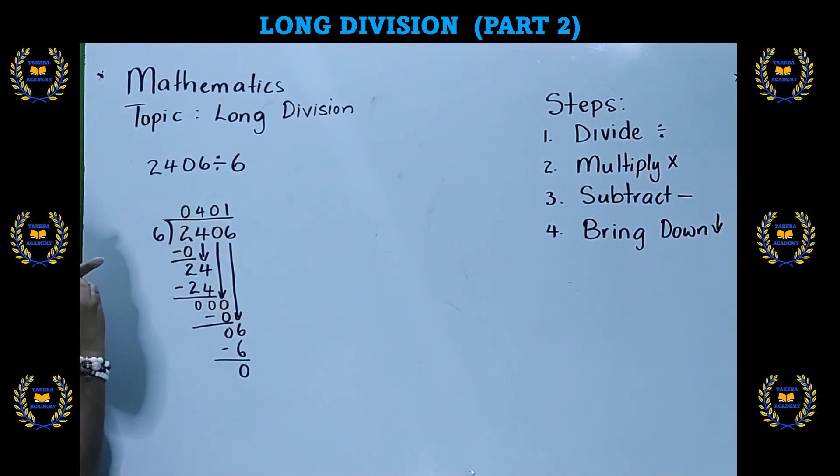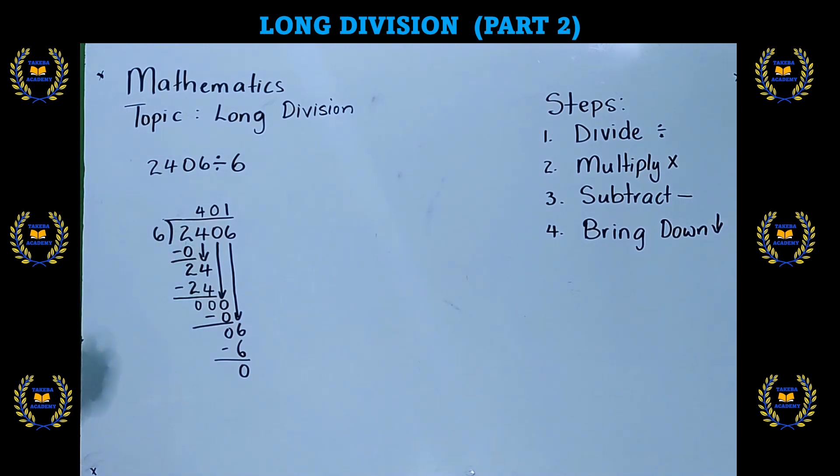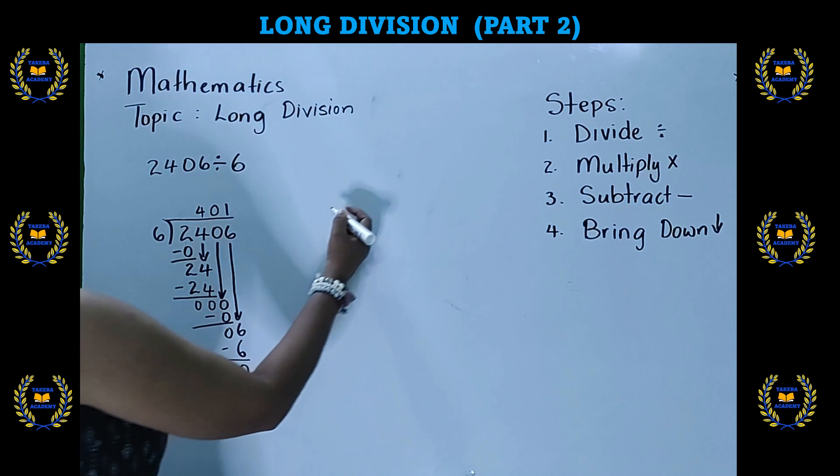Again, this 0 here has no significance. So we can simply erase it, because it doesn't have any significance to our number. It just basically allowed us to go through the steps if you had any difficulties. Now, let me show you. We're going to put the problem again.